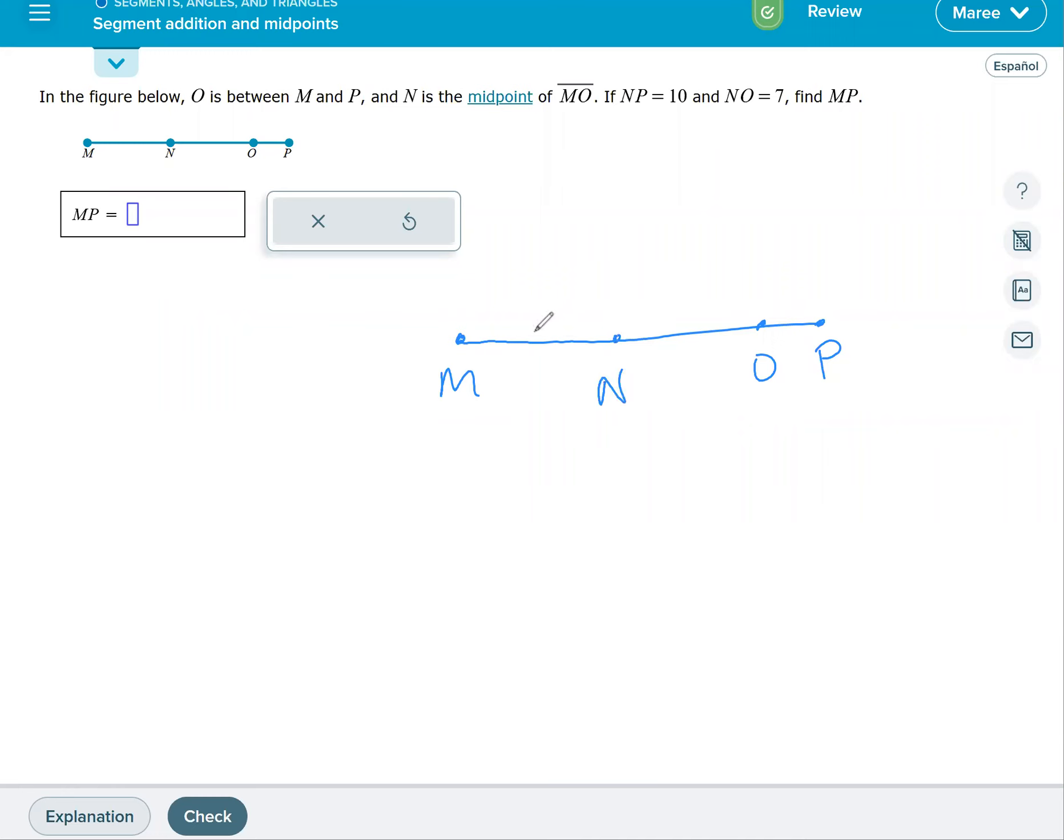When it is a midpoint, I know that MN is going to equal NO. And we just show equality on segments by using this little tick mark. So it tells us NP, so from N all the way to P is equal to 10. So I kind of label it this way. It shows me we're starting at N and we're ending at P and that's 10. NO is equal to seven. So from N to O, we have seven.